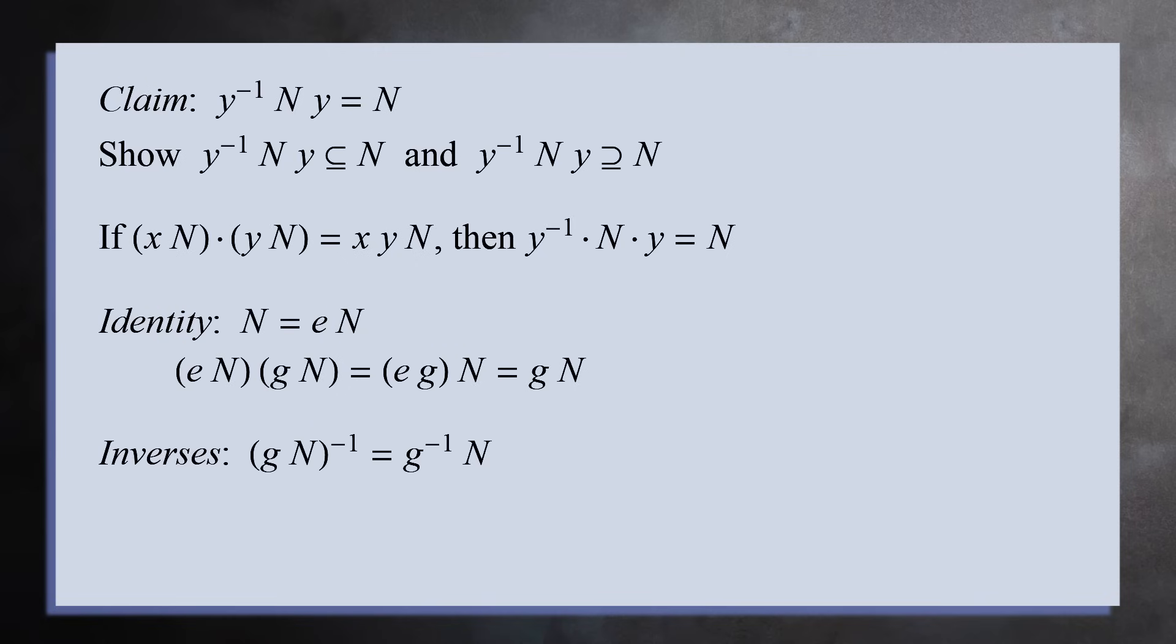And for each coset gN, the inverse is g inverse N, because if you multiply these two cosets together, you get g times g inverse N, which equals eN, or simply N, which is the identity element.